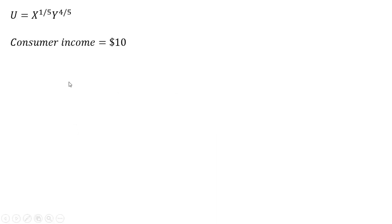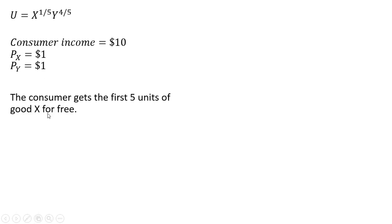In this video, we're going to do a utility maximization problem when the consumer has a kink in their budget constraint. Here is the consumer's utility function — it's a function of units of good X and units of good Y. We're going to assume that the consumer has $10 of income, the price of good X is $1, and the price of good Y is also $1. To get the kink in the budget constraint, we're going to assume the consumer gets the first five units of good X for free.